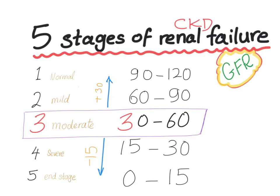Stage 1: GFR will be 90 to 120. Stage 2, mild: 60 to 90 GFR. Stage 3: 30 to 60. Stage 4, severe: 15 to 30. Stage 5, which is end stage: 0 to 15.